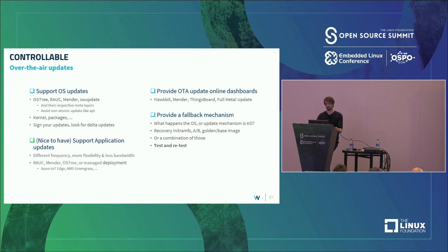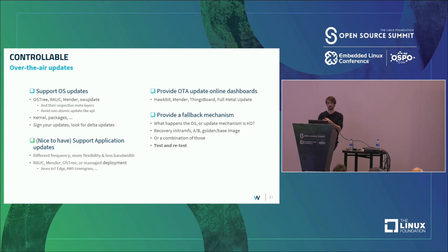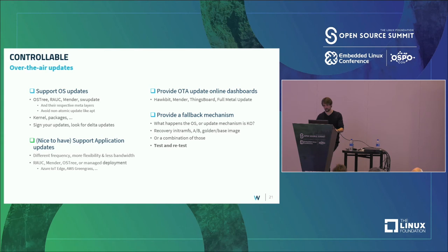Options for fallback include a recovery initramfs, AB partitions, AB plus a factory partition, or a golden/base image. You basically need to be 100 to 200 percent sure your device is not going to be bricked — unless you're fine with having it shipped back and manually fixing it. You can use a combination of those and test and retest to make sure it works properly.